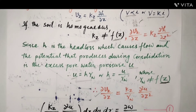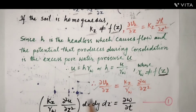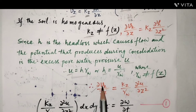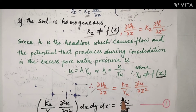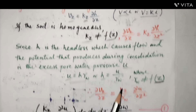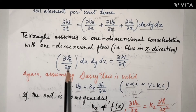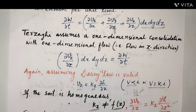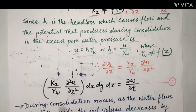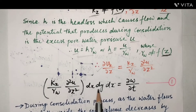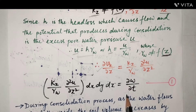Substituting this value of ∂Vz/∂z = (kz/γw) · ∂²U/∂z² into the continuity equation, we get: (kz/γw) · ∂²U/∂z² · dx·dy·dz = ∂W/∂t. This is equation number 1.